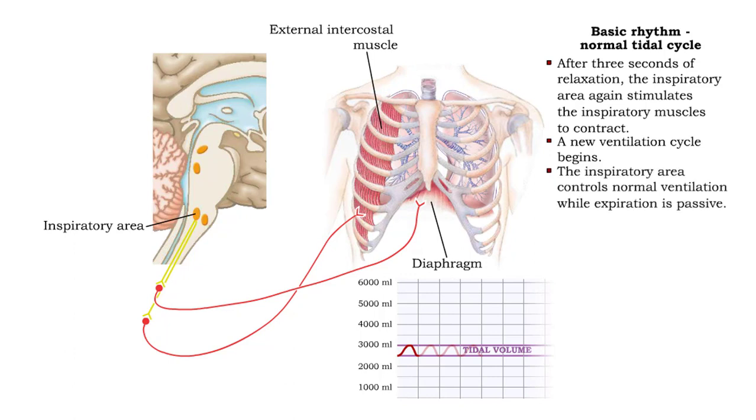Thus, the inspiratory area controls normal ventilation, while expiration is passive.